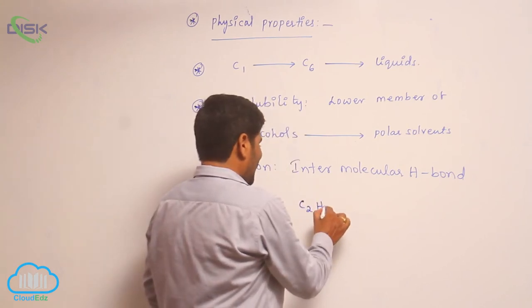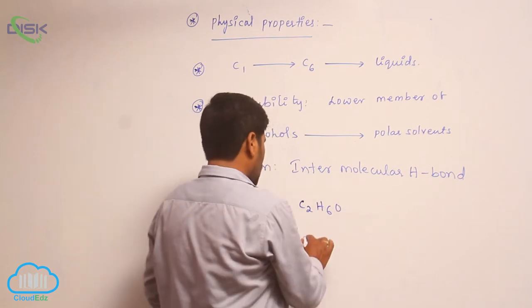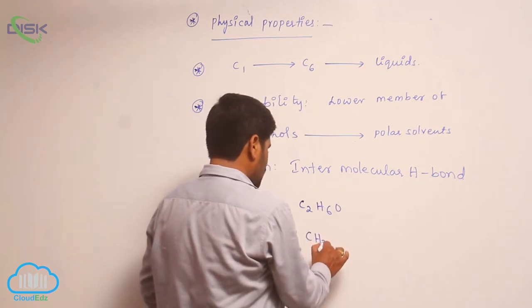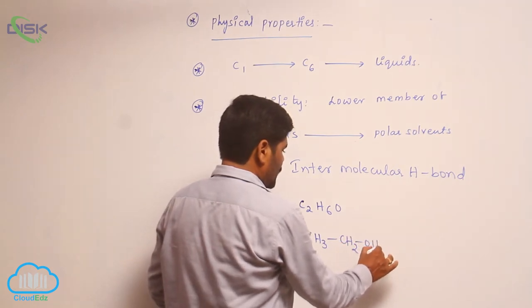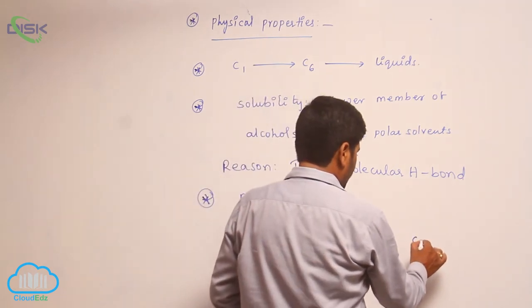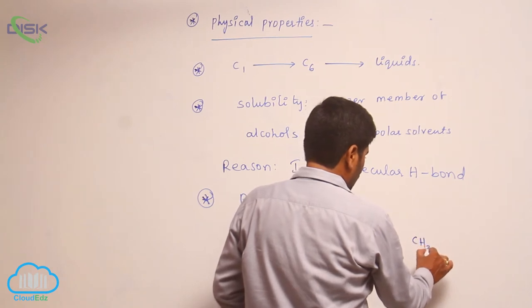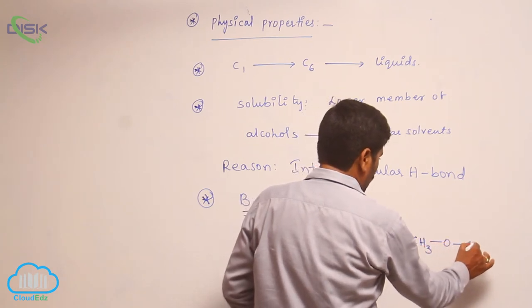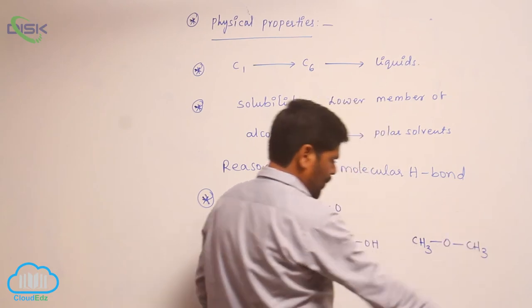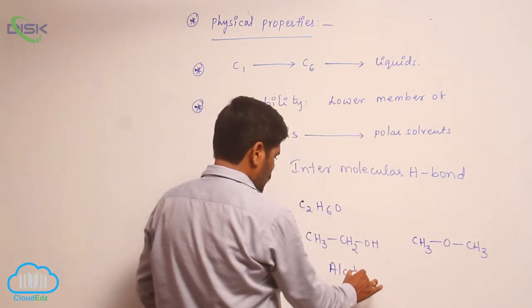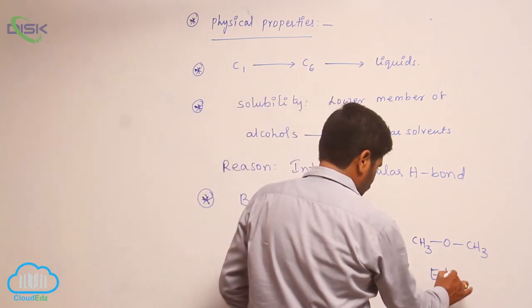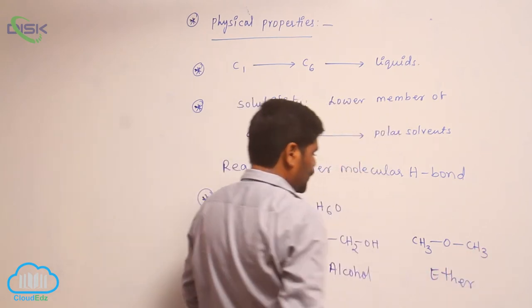C2H6O: CH3CH2OH, and CH3OCH3. This is alcohol. This is ether. Alcohol and ether.